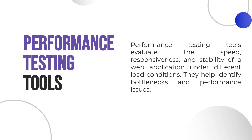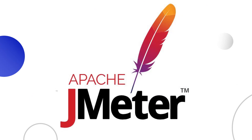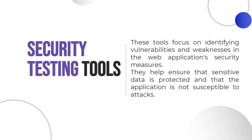Let's move to the next category: performance testing tools. These tools evaluate the speed, responsiveness, and stability of a web application under different load conditions, helping identify bottlenecks and performance issues. Several popular performance testing tools are Apache JMeter, Gatling, Locust, Artillery, etc. In this course, we'll have a separate video for JMeter, where we'll explain what JMeter is, provide an overview of the main components in the JMeter interface, and demonstrate several basic practical functions that testers can use in their work.